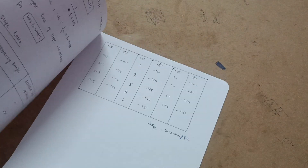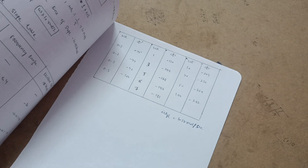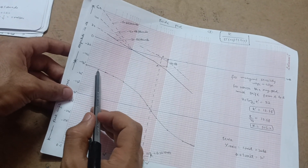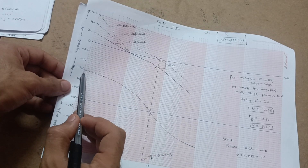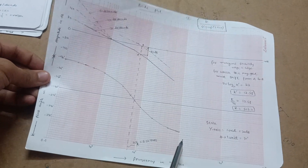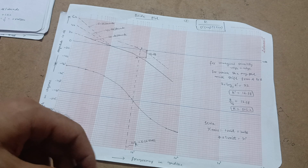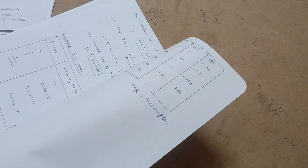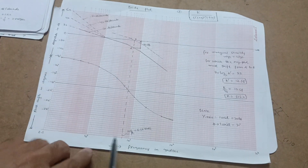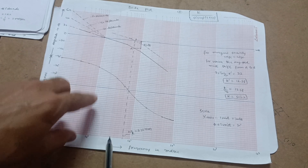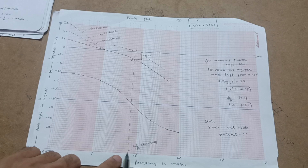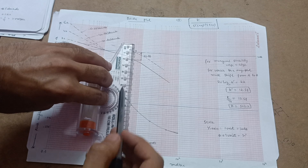For the phase angle plot, use the tabulated values: at ω = 0.1 mark −92°, at ω = 0.2 mark −94°, and so on. Mark these points and draw a smooth curve through them to complete the phase angle plot. Since ωpc = 6.3 rad/s, draw a vertical line at ω = 6.3 up to the zero dB reference line.